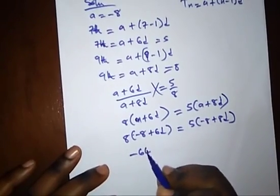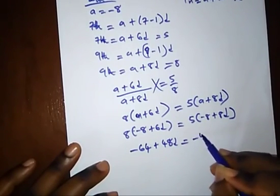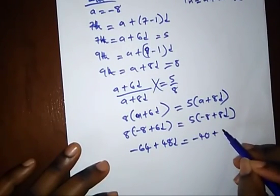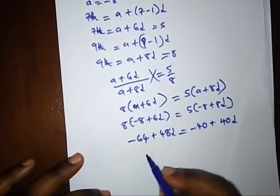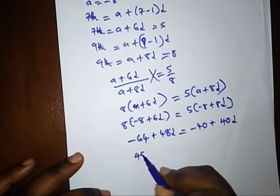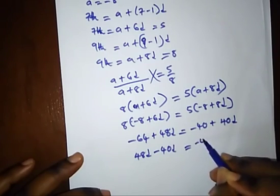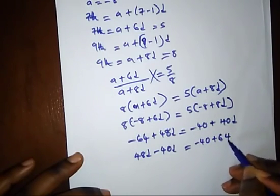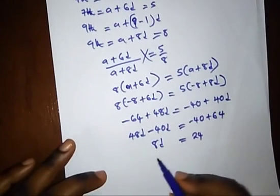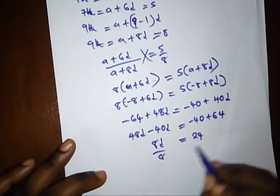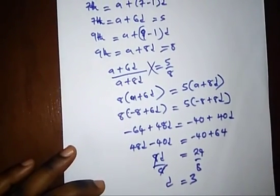Opening the brackets: -64 + 48d = -40 + 40d. Taking like terms: 48d - 40d = -40 + 64, so 8d = 24. Dividing both sides by 8, we get d = 3. So our answer is 3.